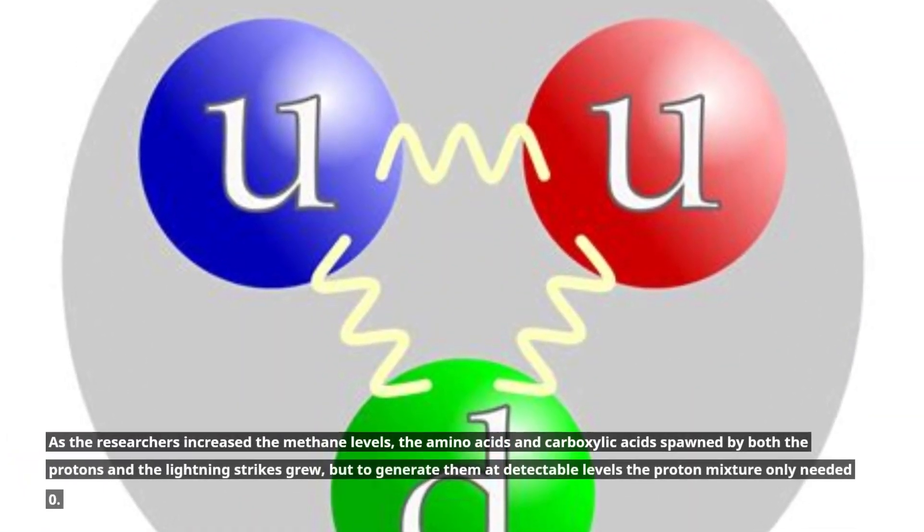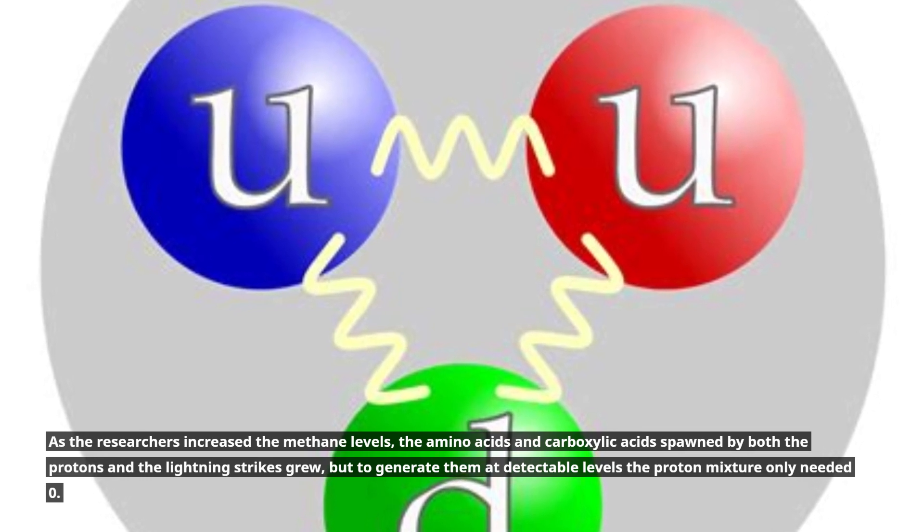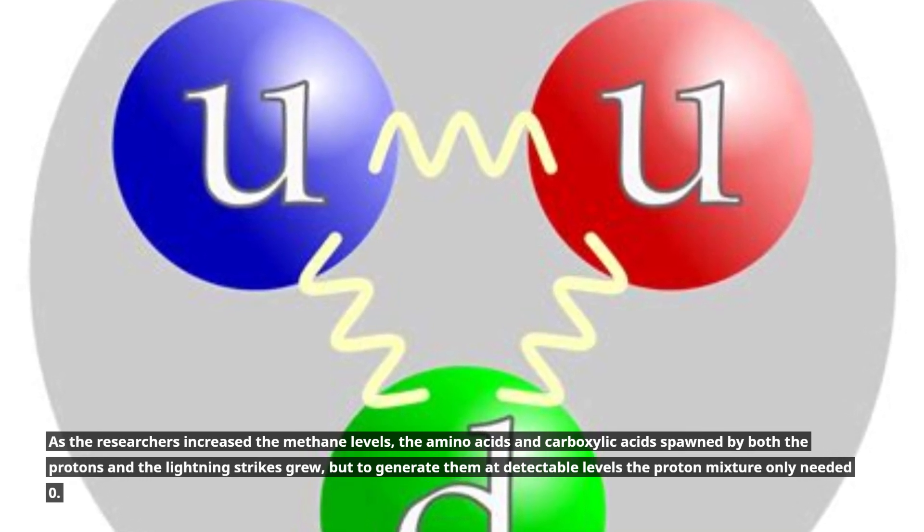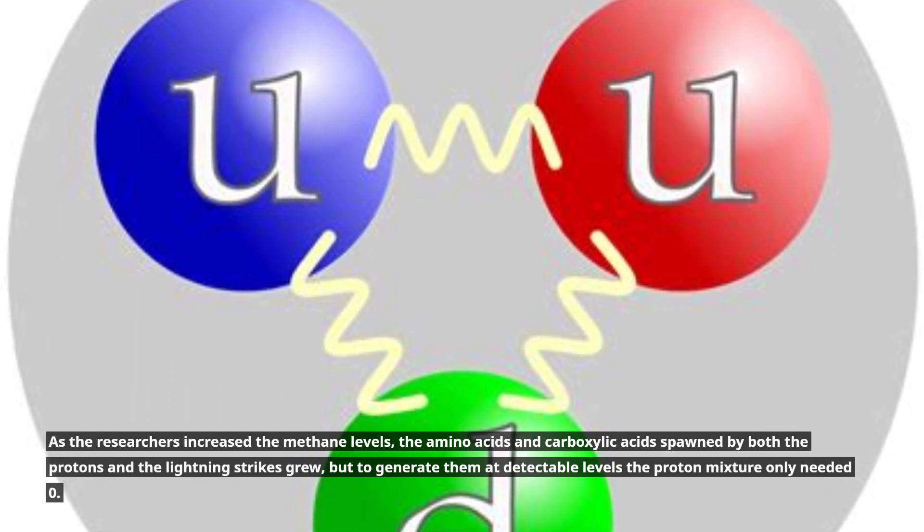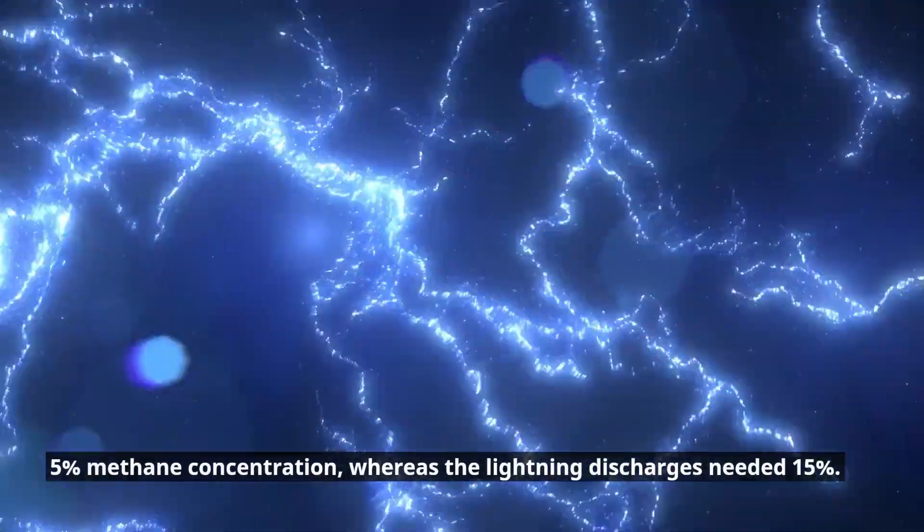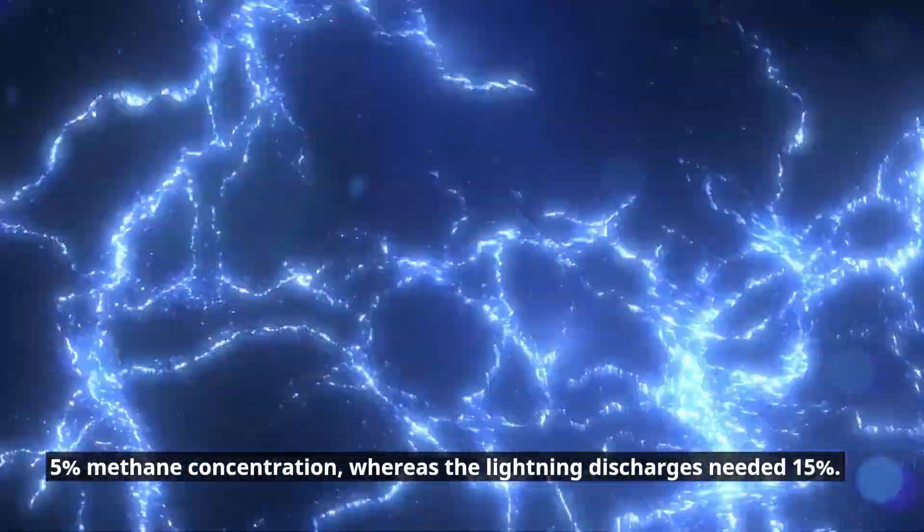As the researchers increased the methane levels, the amino acids and carboxylic acids spawned by both the protons and the lightning strikes grew, but to generate them at detectable levels the proton mixture only needed 0.5% methane concentration, whereas the lightning discharges needed 15%.